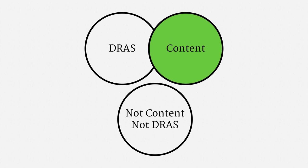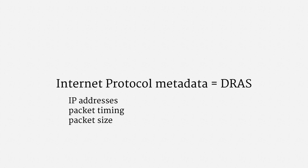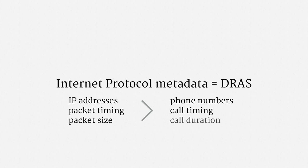As we've seen, a wiretap order is like a super warrant, and it's very burdensome for investigators to obtain. There is fairly widespread agreement that internet protocol metadata is DRAS. It's unprotected by the Fourth Amendment, and it's available with just a pen trap order to an internet service provider. That includes information like IP addresses, when packets of data are sent, and how large packets are. Internet protocol metadata fairly closely parallels telephone metadata — IP addresses work a lot like phone numbers, and packet timing and size are a lot like call time and duration. Some computer scientists have emphasized that a pattern of packets can be highly revealing in a way that phone calls might not be, but those views haven't gained traction in legal circles.